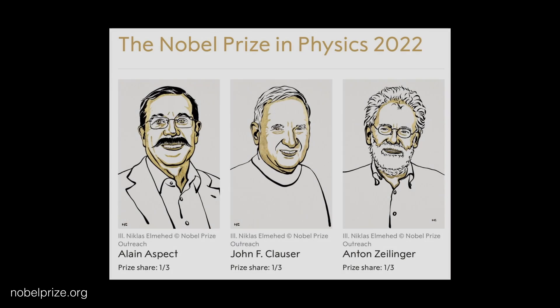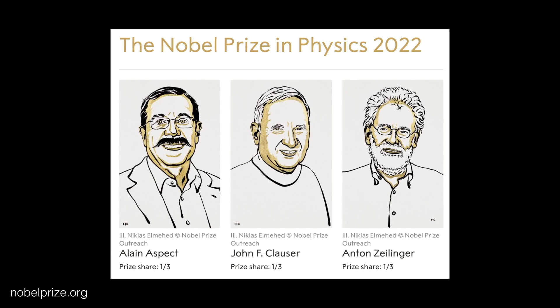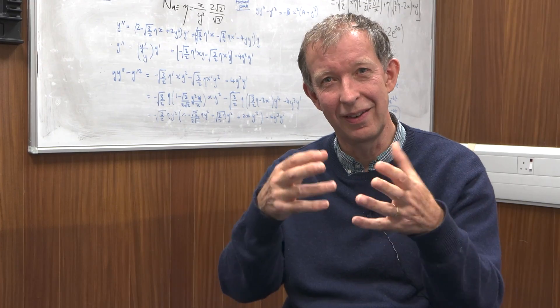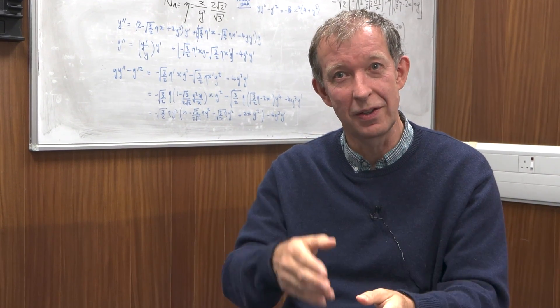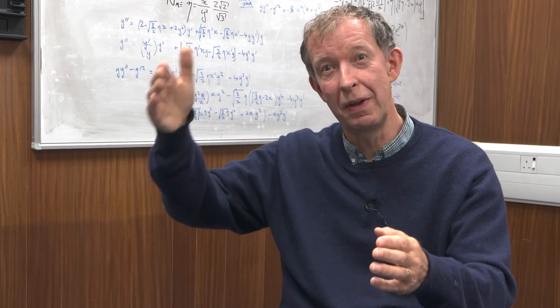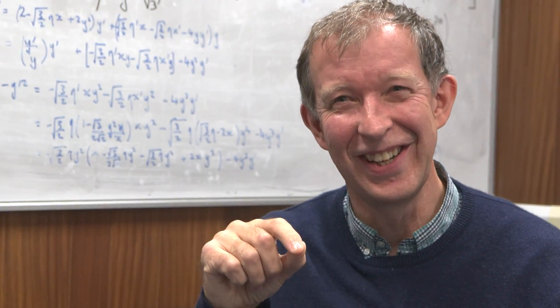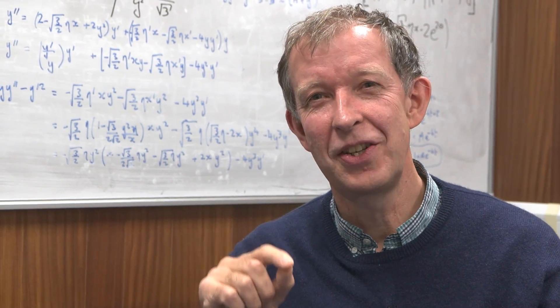And then that's the experimentalists, the three experimentalists actually got interested in this paper of Bell's and they got their Nobel Prize because they actually went and developed experiments which tested this Bell's inequality and found that it was always being violated.